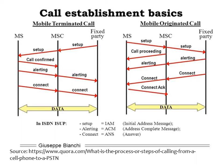A mobile originated call starts from a mobile subscriber. A setup is made to the mobile switching center and to a fixed party, whereby a call proceeds, an alert is set up, and then a connection is established and acknowledged between the mobile subscriber and the mobile switching center, after which data can be transmitted.